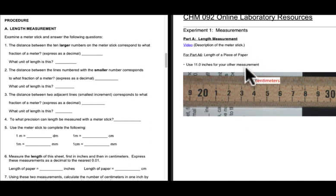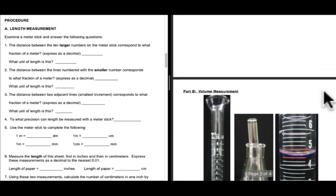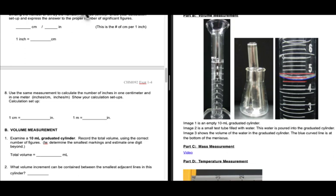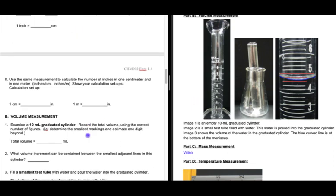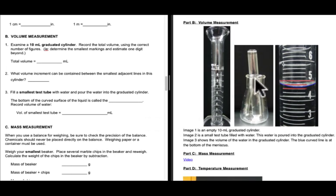What I've tried to do in the PDF is replicate parts A and B in the same language as the report sheet, so either a video or image is provided for each part. Scrolling down, here are the volume measurements for part B.